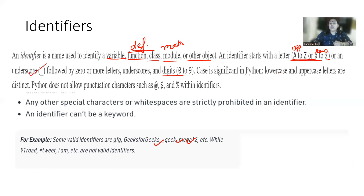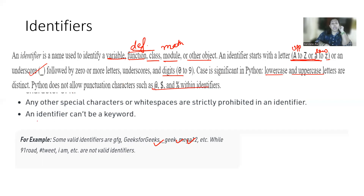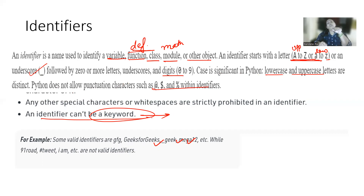The case is significant in Python — lowercase and uppercase letters are distinct. Python does not allow punctuation characters, so this type of thing Python doesn't allow. And one more thing: an identifier can't be your keyword. I have already shown you how to see the keyword list in the Python library — you have to just go to Python IDLE.